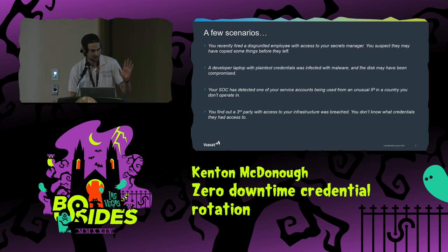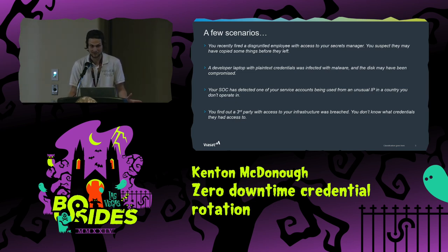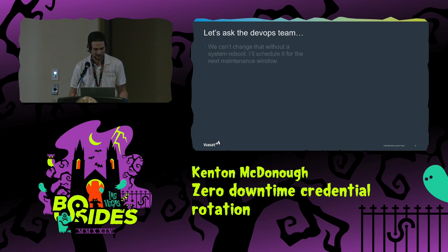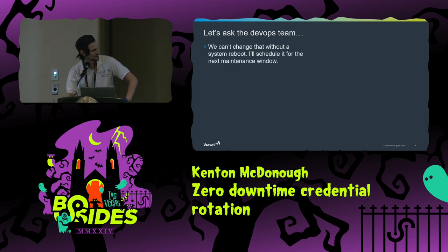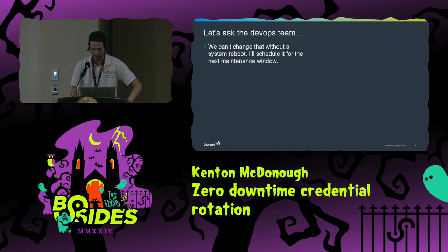Or maybe you find out that a third party with access to your infrastructure was breached. You don't know what credentials they had access to, because you trusted them. In all of these scenarios, your next move should be: let's rotate some credentials. So you go ask your DevOps teams and you might get a response like, 'I can't change that without a system reboot, so I'll schedule that for the next maintenance window.' Downtime.